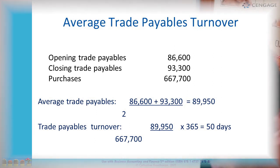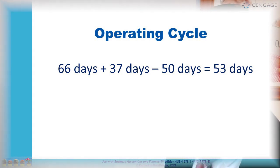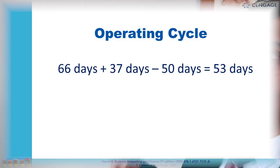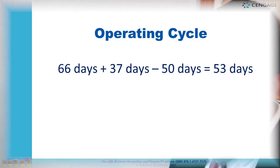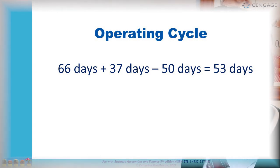Now we have calculated all three ratios and can put the results into the operating cash cycle formula: 66 days plus 37 days, because investing in inventory and allowing credit sales ties up our cash, adding to the cycle. Then we subtract 50 days for payables, because delaying payment to suppliers reduces cash outflow. This gives us an operating cash cycle of 53 days.